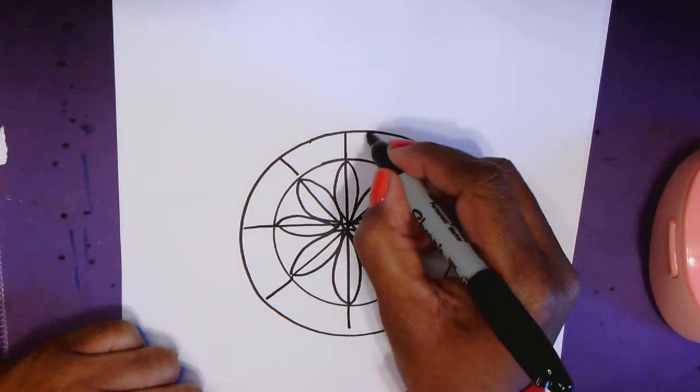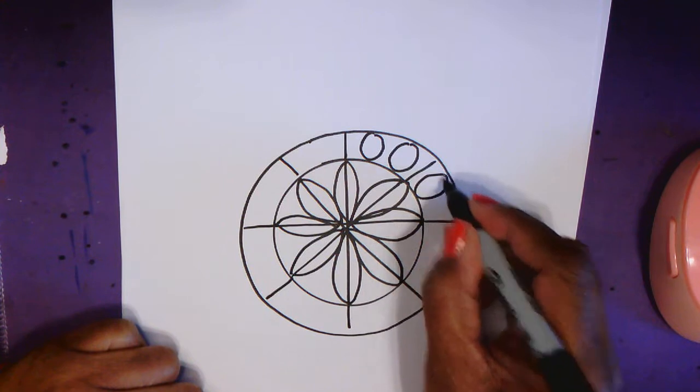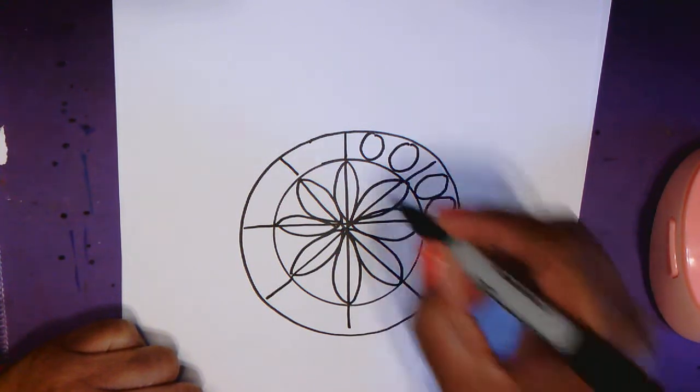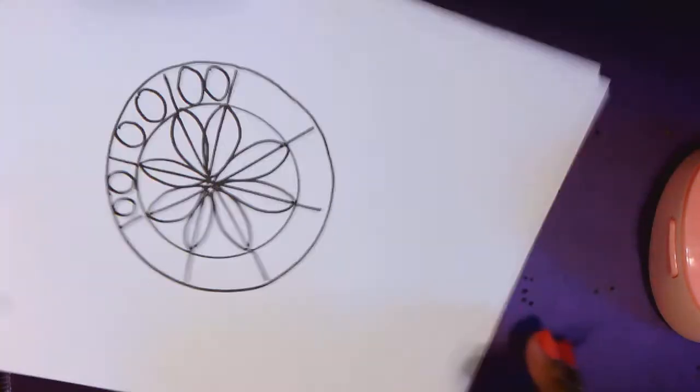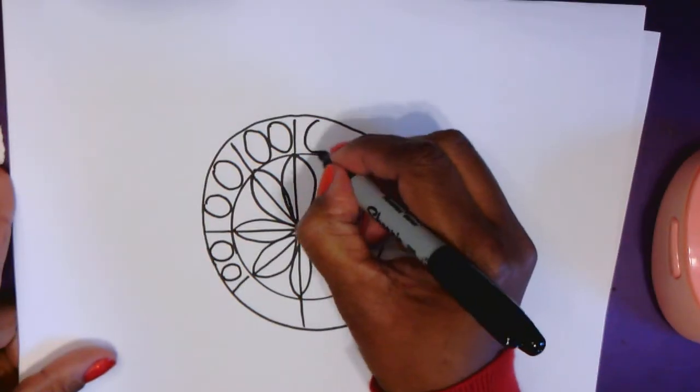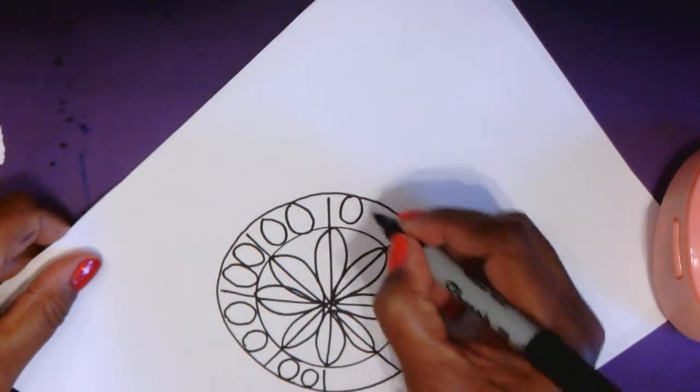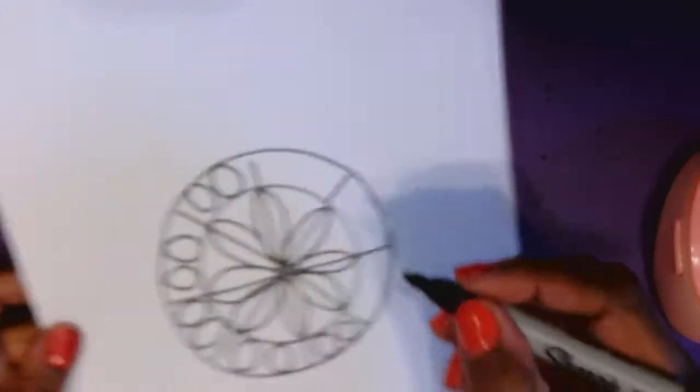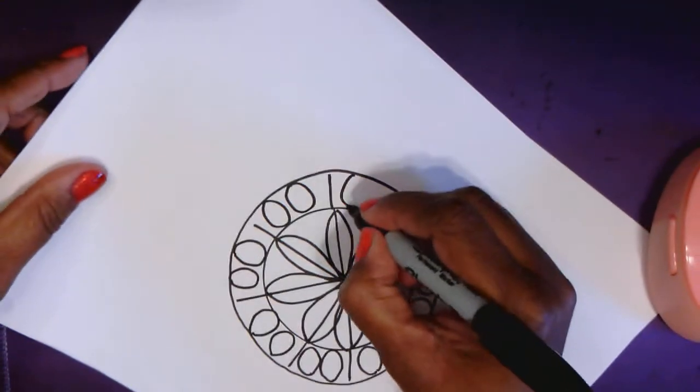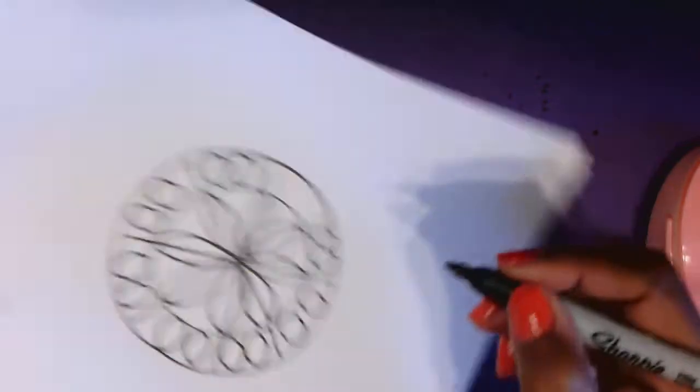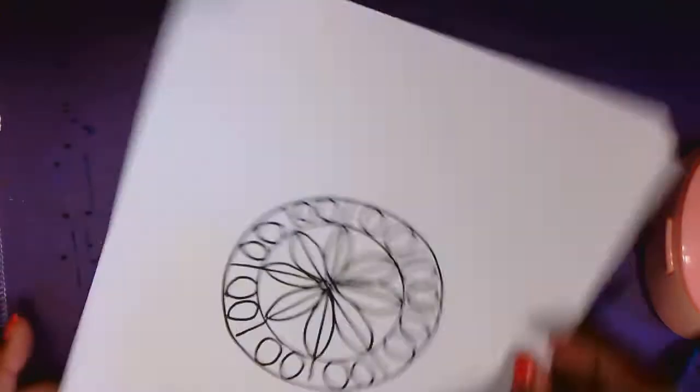And the X. Alright so I'm going to try to everything I do in one section I'm going to do in the other sections. So I'm putting two circles in each section. So that it stays kind of symmetrical.